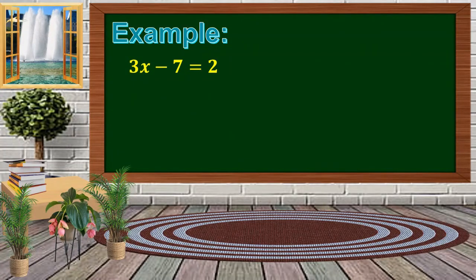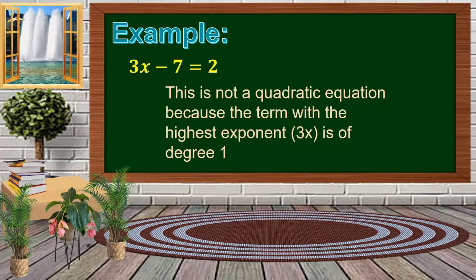For example, we're going to determine if this equation is quadratic or not. This is not a quadratic equation, because we have 3x and the degree is 1. The variable x has an exponent of 1, so that is not a quadratic equation.